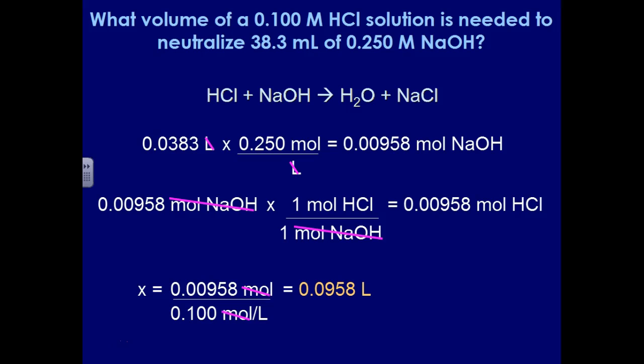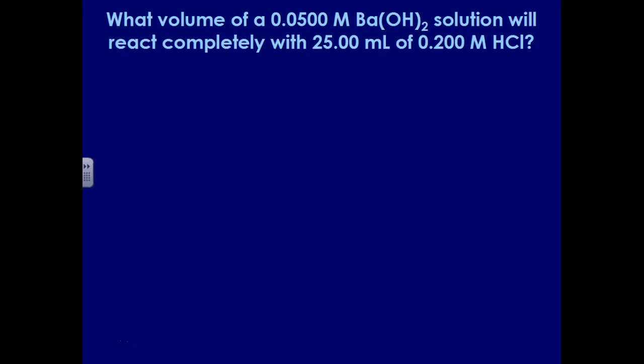The reason we're doing the second example, it's pretty much like the first one, is that the stoichiometric ratio this time is not going to be one-to-one, because we're working with an alkaline earth base, barium hydroxide. We want to know how much of that barium hydroxide solution we would need to add to use up 25 mils of 0.2 molar HCl. So this time it's a two-to-one ratio between the acid and the base.